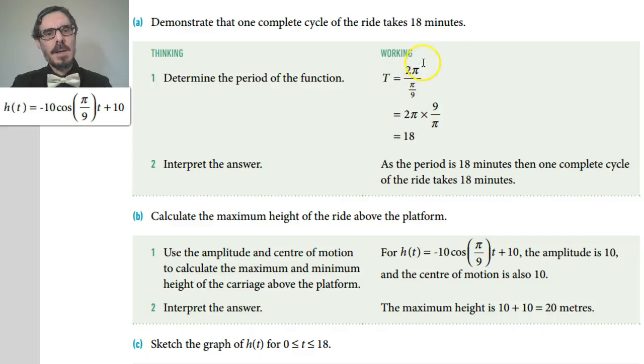Well remember the period is 2π on that parameter. 2π over π/9. Well the π's will cancel out and I've got 9 times 2. 9 times 2 is 18. Remember our t was in minutes so that's 18 minutes. You've done one complete cycle.